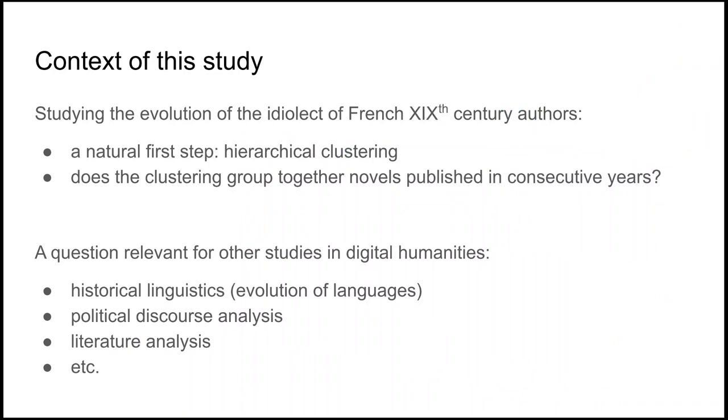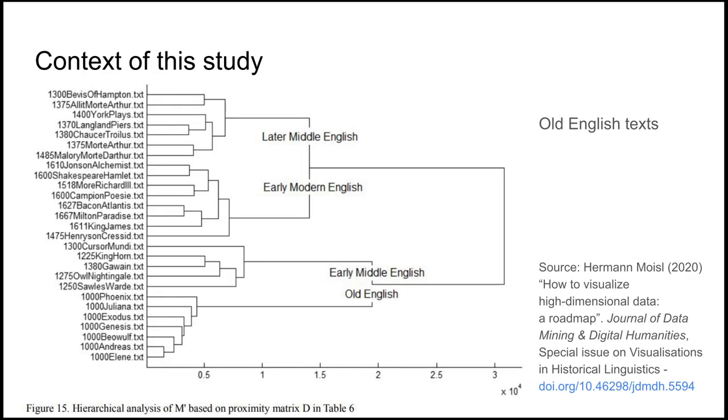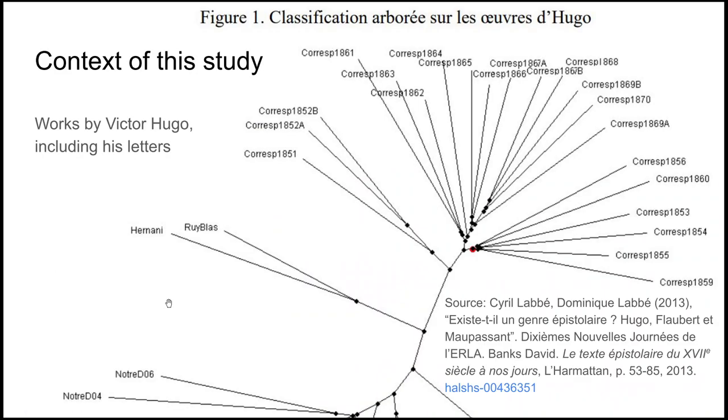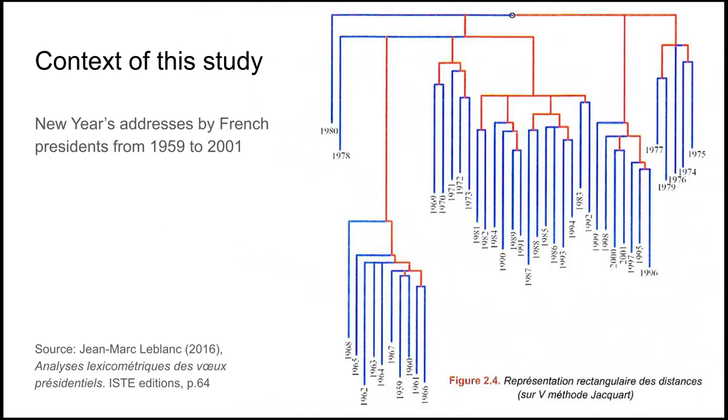Well, it seems to be the case in the beginning. You have the 60s, 80s, 20th century in the end. And so the idea is to quantify this. And actually, this question is relevant also for other studies in digital humanities. Here is an example in historical linguistics, where you have a corpus containing works of different periods of time in Old English. And you see that there seems to be something logical here. Here with works by Hugo, you have the letters on top in this clustering. And again, you see that consecutive years seem to be arranged quite logically in the tree. Finally, something in political discourse analysis in the book by Jean-Marc Leblanc, you see that his analysis of the New Year's addresses by French presidents also show that there are some chronological groupings.